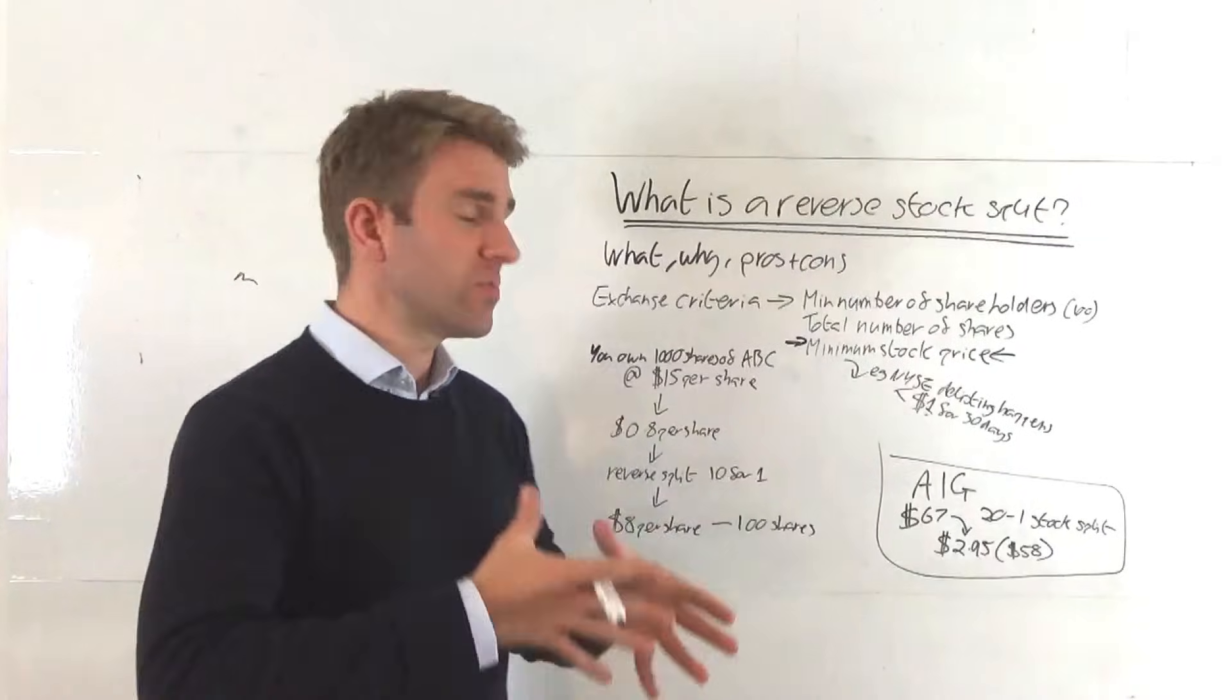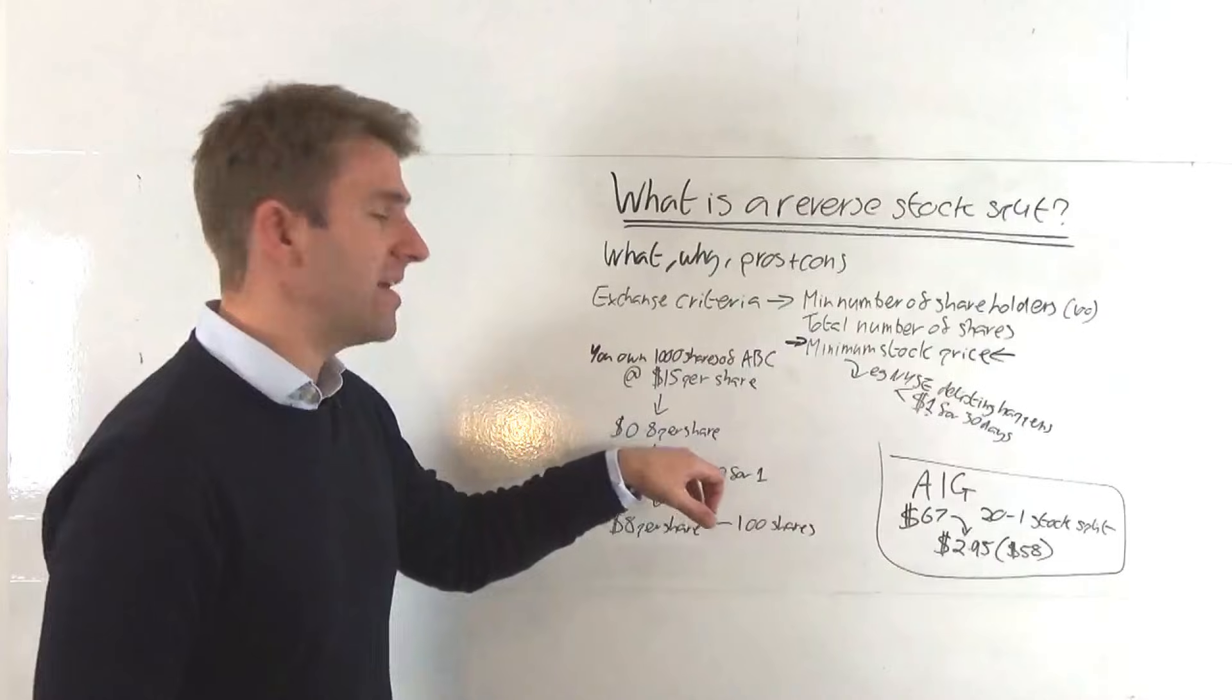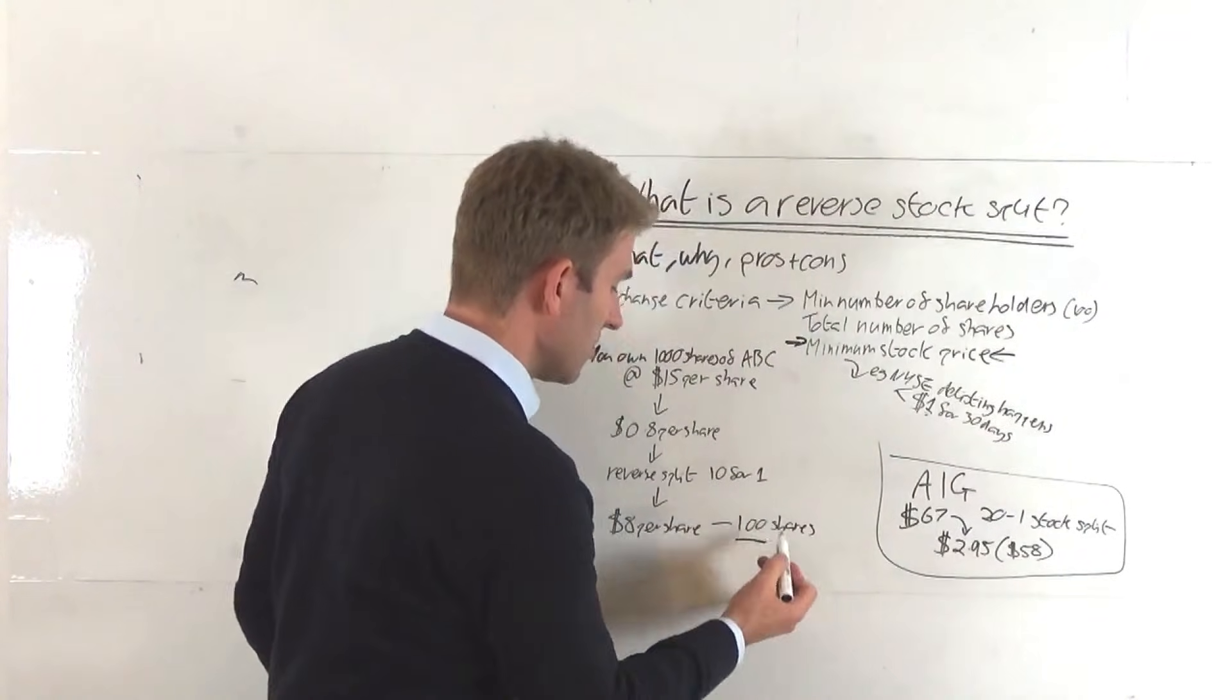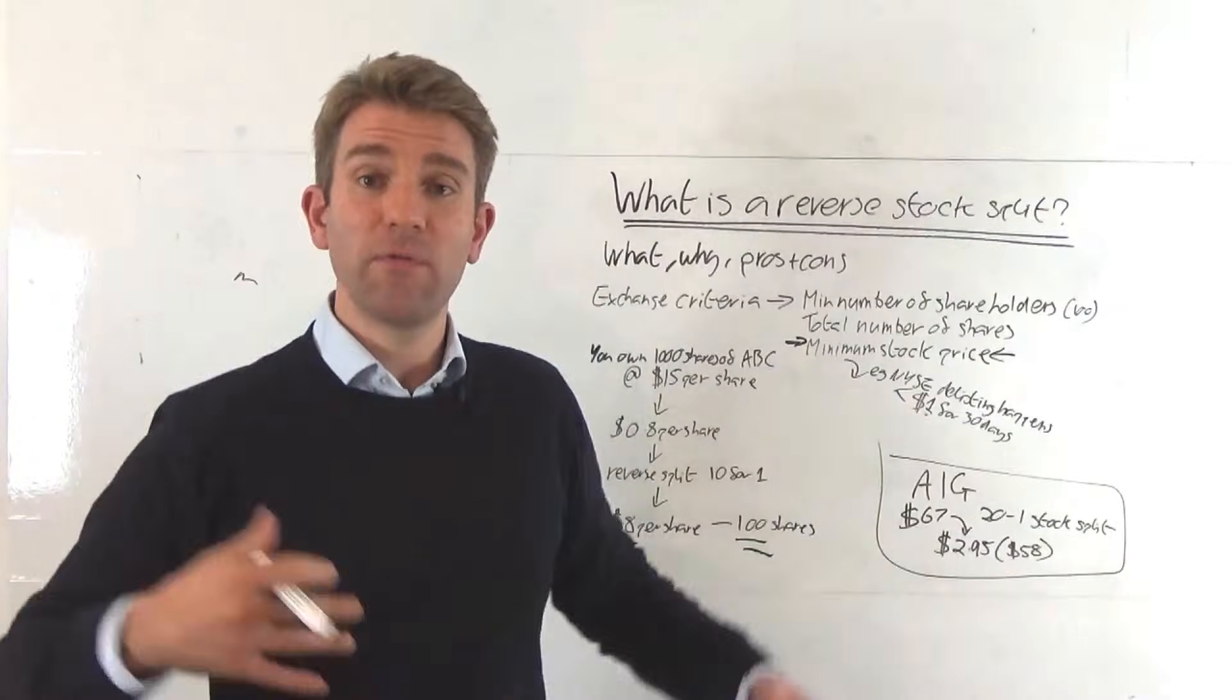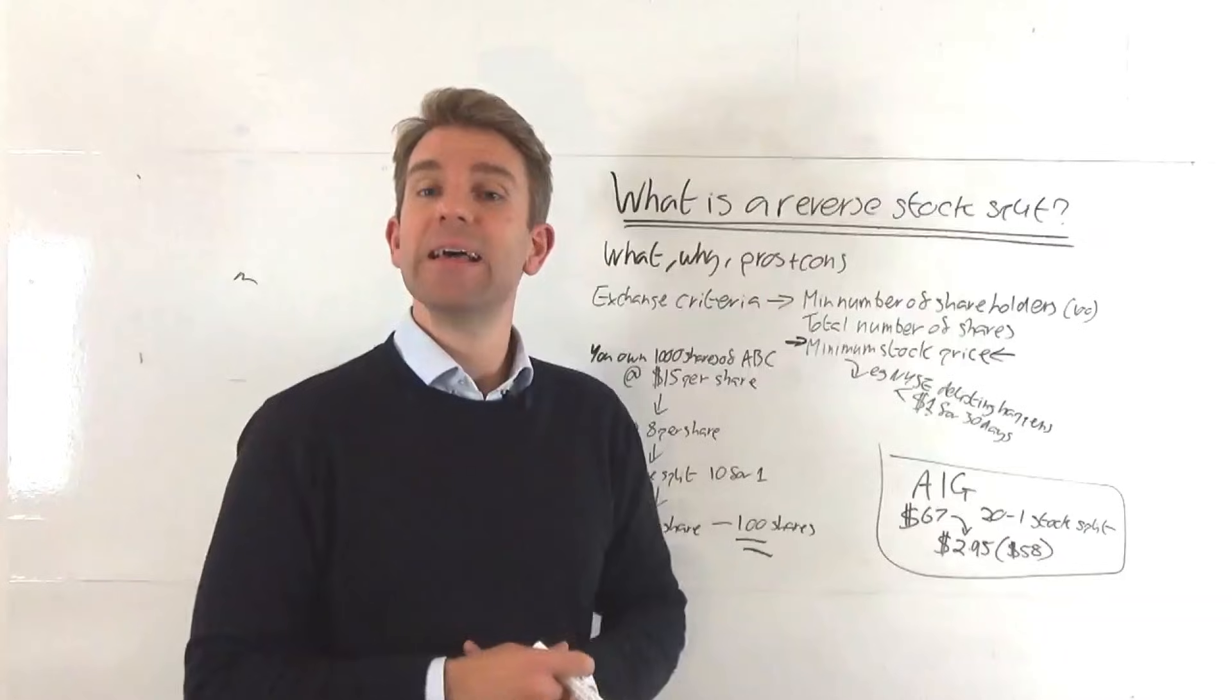So you had a thousand shares and it was worth 80 cents per share. Now you've got a hundred shares. You've got a 10-for-1 split and they're worth now $8 per share. So if this hypothetical company was trading on the NYSE, that's great. That's alleviated the problem of it trading under one dollar for 30 days.